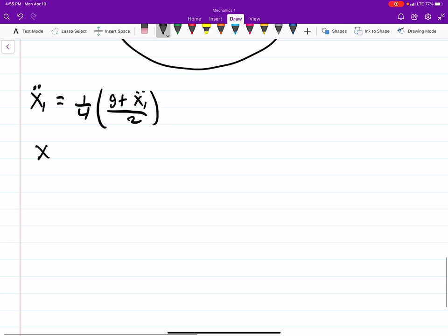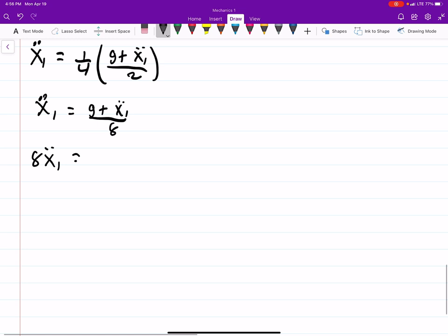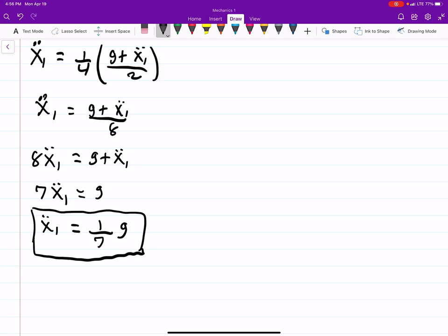If I multiply over, 8x1 double dot is equal to g plus x1 double dot. Subtracting x1 double dot over I get 7x1 double dot equals zero, sorry g not zero. And if I divide over 1 over 7g is equal to x1 double dot. I might have said things wrong but what I write down is what I actually mean most of the time.